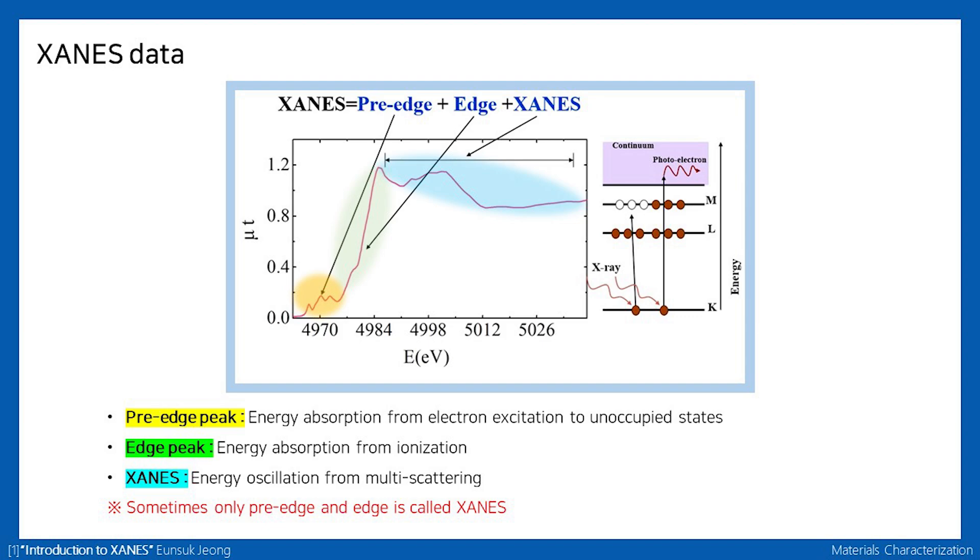XANES data can be divided into largely three regions. The lowest energy region, which is before the highest peak, is called the pre-edge peak. This peak comes from the energy difference of the electron excitation to the unoccupied states. On a higher energy level, the highest peak, called the edge peak, is observed, and this peak corresponds to the ionization energy of the target atom. Finally, the XANES peak comes from the energy oscillation from multiple scatterings.